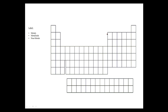This is the periodic table. The periodic table can be divided into three sections. In order to do that we need to draw a staircase. So here I go drawing a little staircase. Now this staircase divides the periodic table into three parts: the metals, metalloids, and nonmetals.